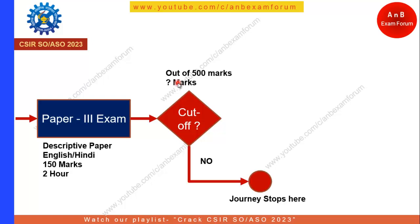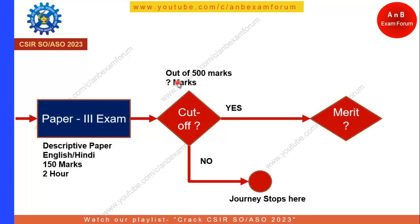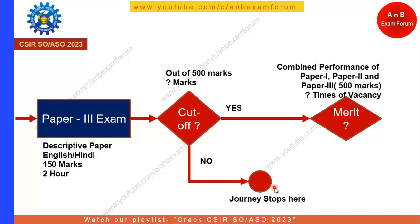The merit will be the combined performance of all three papers, which is out of 500 marks. Again, how many candidates they have not mentioned — I am very clear on that. If you are not able to come in the merit, your journey stops there. If you are in the merit, you proceed to the next stage.